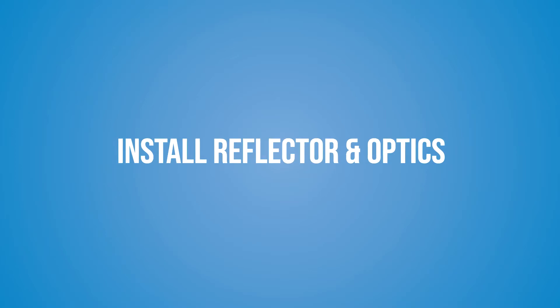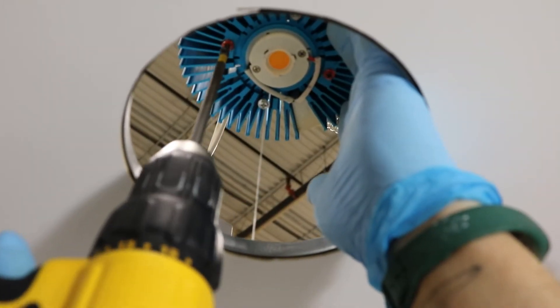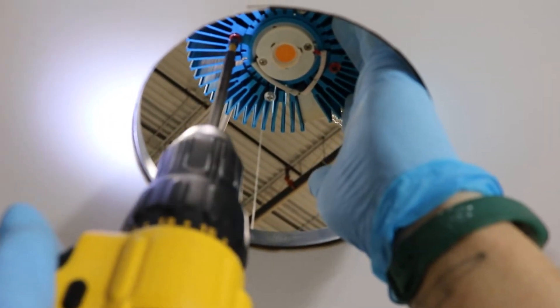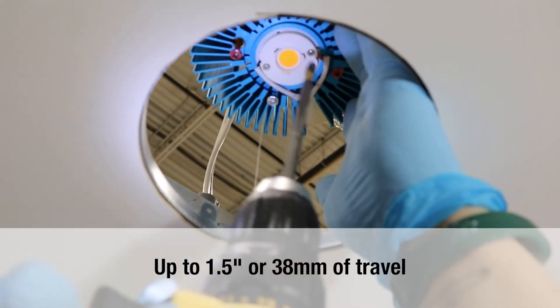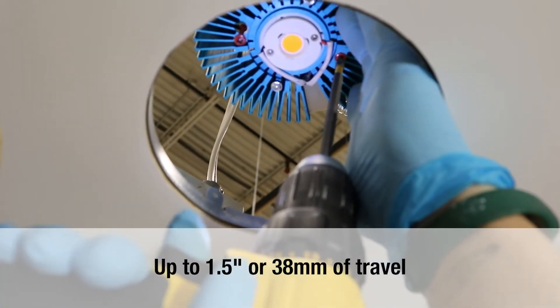Install reflector and optics. Prior to installing the reflector, the heatsink must be lowered. This heatsink has up to 1.5 inches or 38 millimeters of travel to accommodate ceiling thicknesses.